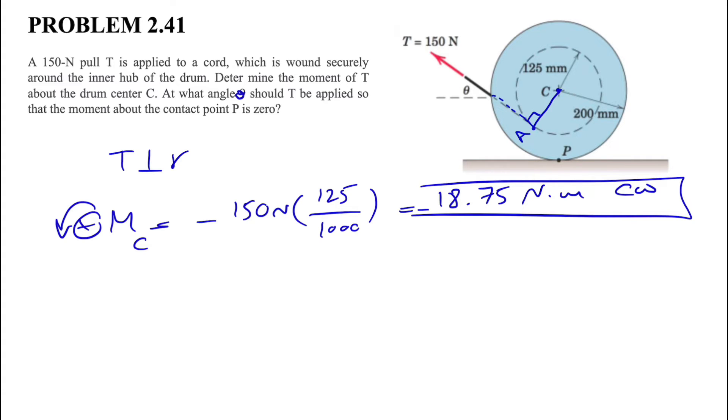In the second part we have our T in a condition to make the moment about point P zero. The moment about P is going to be zero when we have T or the line of action of T passing through point P.